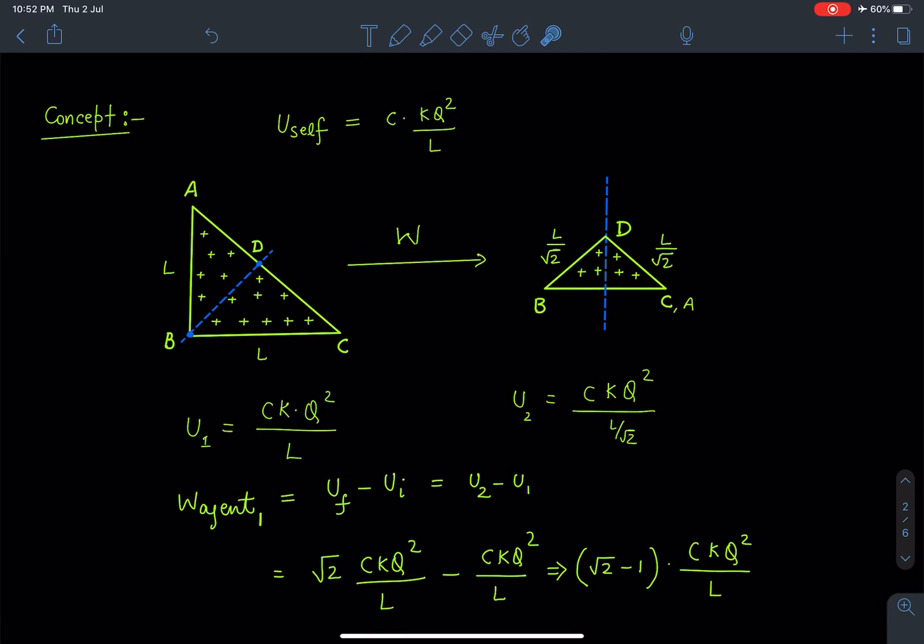So initial potential energy we are writing as Ckq^2/L where C is a number which depends on the geometry. Since geometry remains same here, so that constant is going to be same and total charge on the plate is also same. But earlier what was L has now become L/√2.